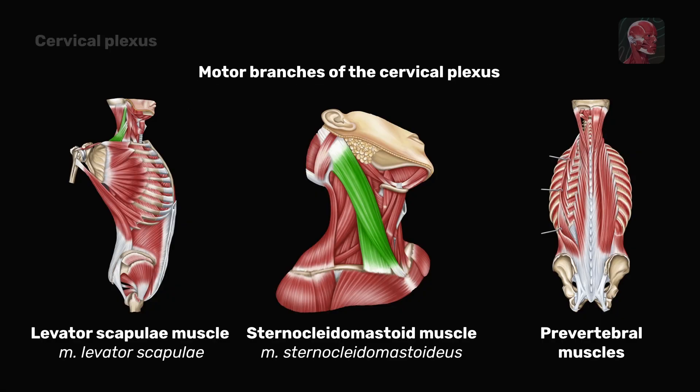The motor branches of the cervical plexus also include fibers to the levator scapulae muscle, the sternocleidomastoid muscle, and the prevertebral muscles.